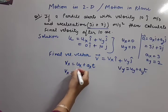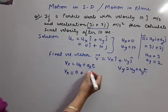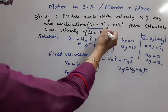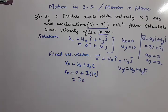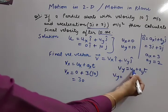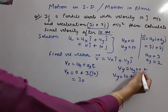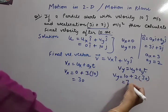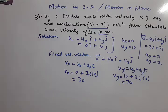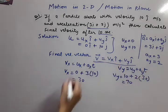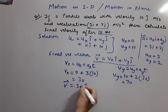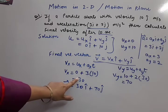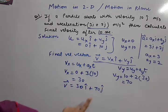Now substituting: vx = ux + axt = 0 + 3 × 10 = 30. And vy = uy + ayt = 10 + 2 × 10 = 30, so 10 + 60 = 70. So vx = 30 and vy = 70. The final velocity vector is v⃗ = 30î + 70ĵ. 30 came from vx and 70 came from vy.